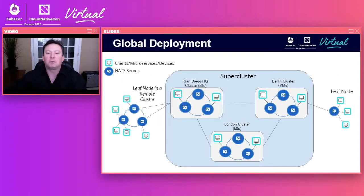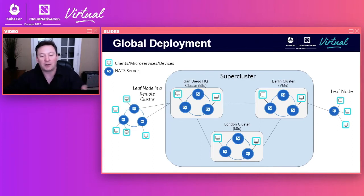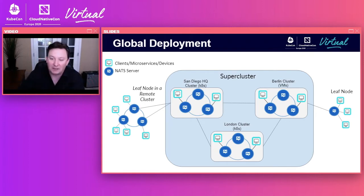Here's an example of a global deployment where you might have a NATS cluster running in Kubernetes in San Diego, a cluster on VMs in Berlin, and another in London on Kubernetes. You have a remote data center clustered together with some services and streams connected into San Diego, and a leaf node that might be like a set-top box with devices connected to it.